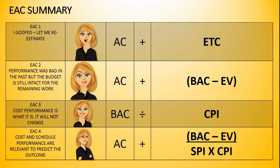So when you take a look at what we've seen so far, we have I goofed, let me re-estimate; performance was bad in the past, but the budget's still intact; or cost performance is what it is, it won't change. She's smiling because maybe her CPI is good. If CPI is one, hey, EAC is going to be equal to BAC. You figure out what I'm saying? If your CPI here is one, then your BAC is going to be equal to your EAC. All right? And then we've got the cost and schedule performance are relevant. That means you want to factor in the cumulative SPI and CPI. All right? So those are four formulas. I hope this helps you make sense of it.